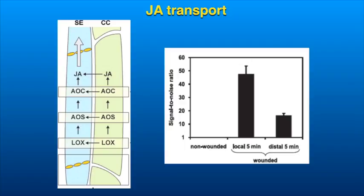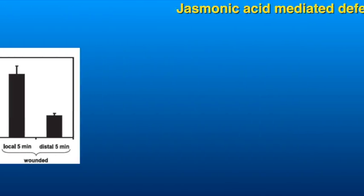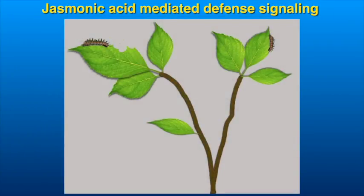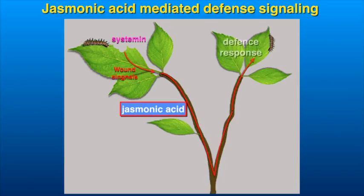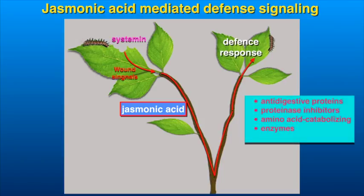After having seen how JA is synthesized, metabolized, and transported, we shall study how JA signaling takes place to give rise to JA responses. One of the most striking JA responses is against wounding caused by leaf-eating insects or grazing animals. JA biosynthesis is also triggered in response to wounding, and the wound response peptide systemin is known to activate enzymes of the JA biosynthesis pathway. JA in the form of JA-isoleucine activates genes coding for proteinase inhibitors or amino acid catabolizing enzymes. These proteins show anti-digestive properties and make the plants unpalatable to herbivores.